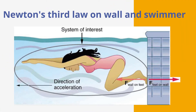The swimmer pushes against the pool wall with their feet and accelerates in the direction opposite to that of the push. The wall exerts an equal and opposite force back on the swimmer. You might think that two equal and opposite forces would cancel, but they do not because they act on different systems.